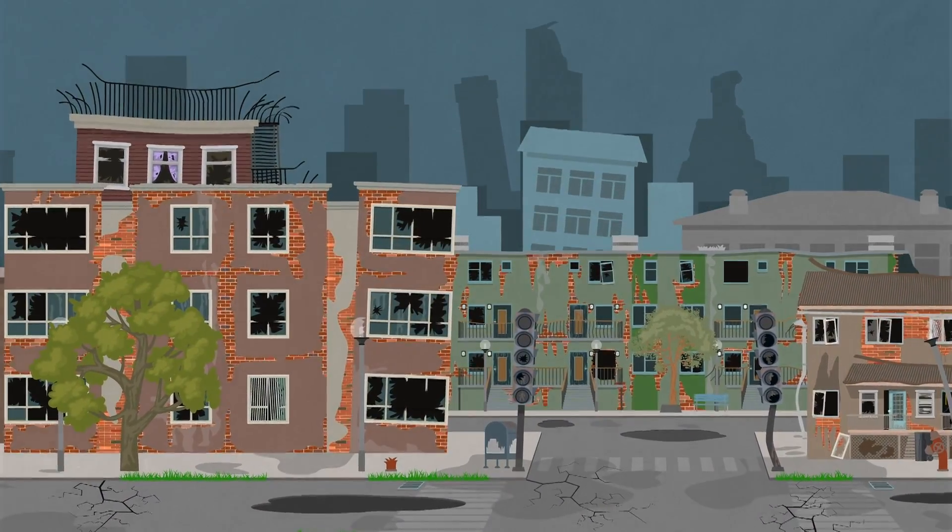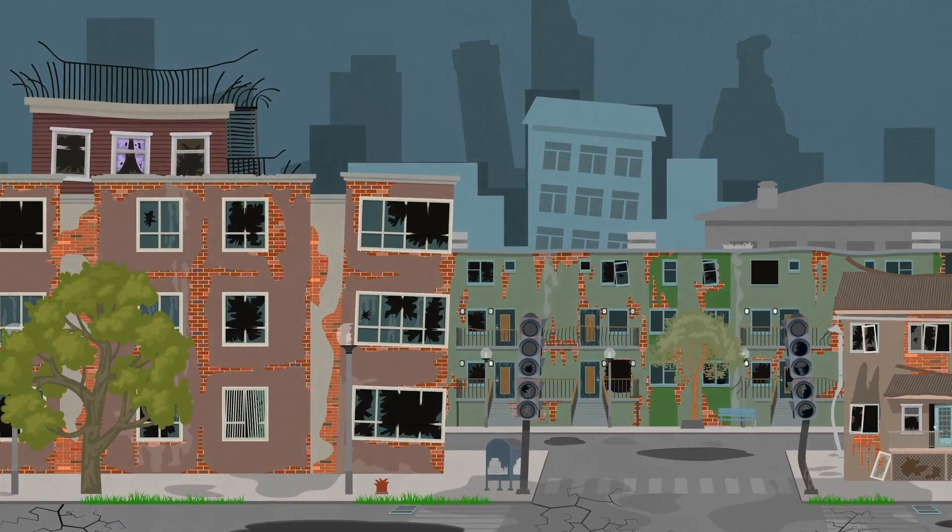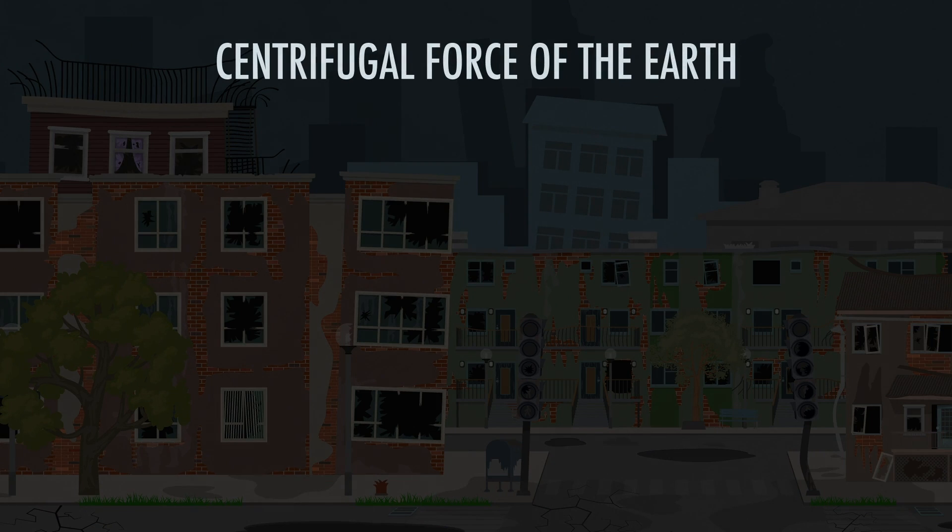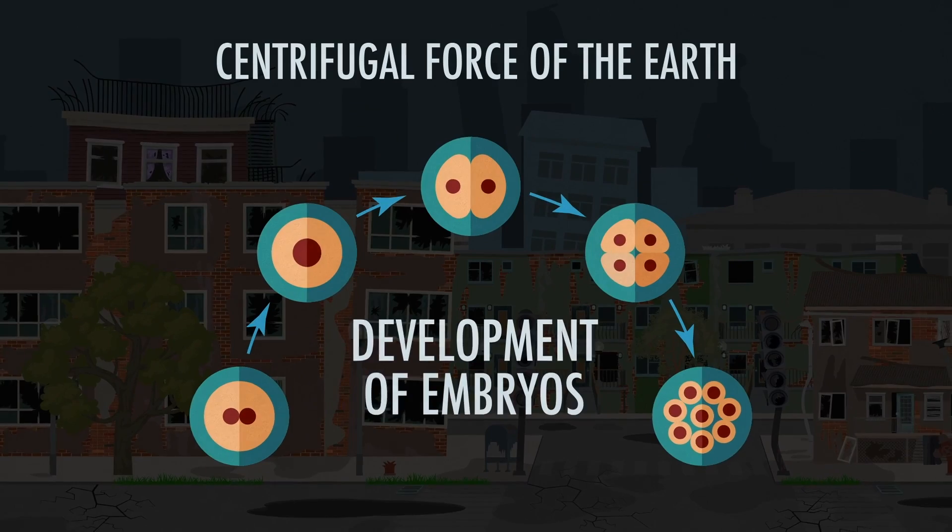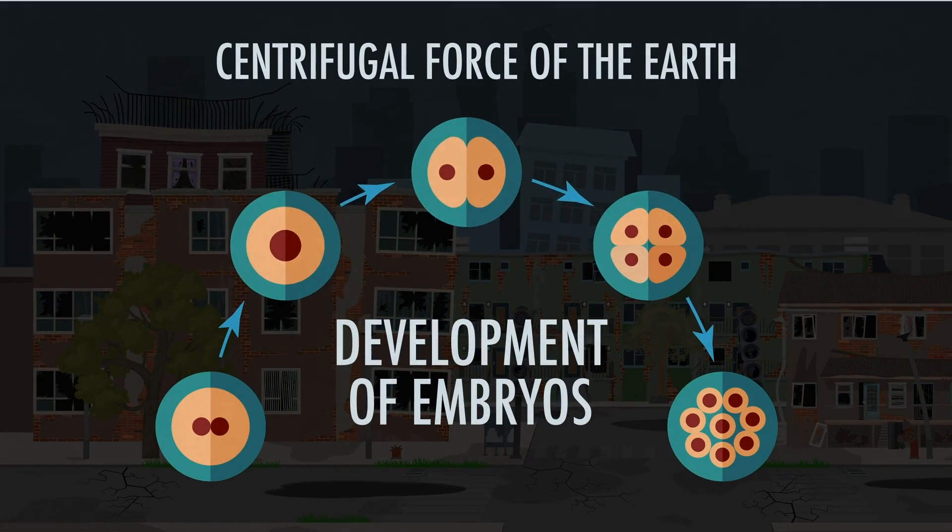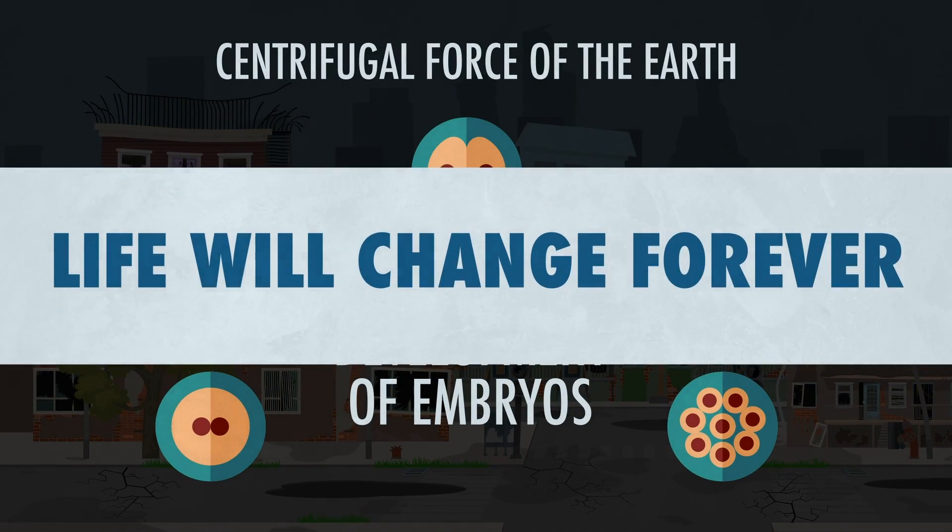That is, if life were still possible under all of the other harsh circumstances. It's thought that the centrifugal force of the Earth is crucial in the initial development of embryos, as well as allowing organs to separate and form in the correct places. Life as we know it would quite literally change forever.